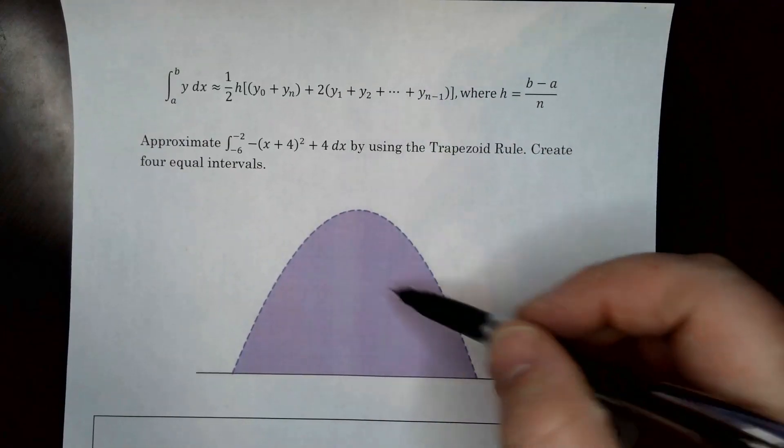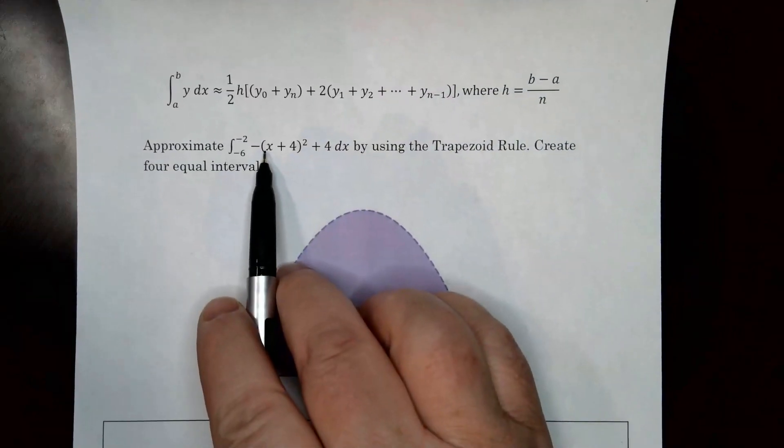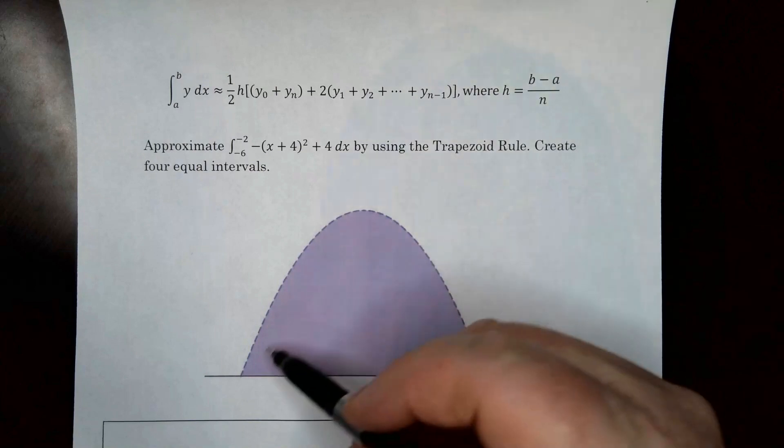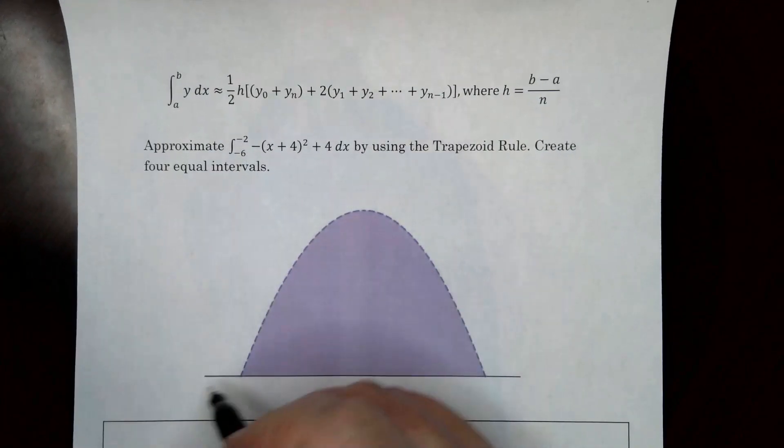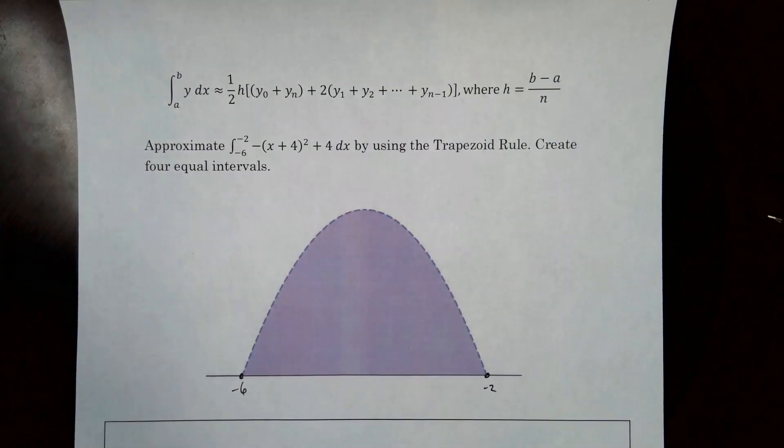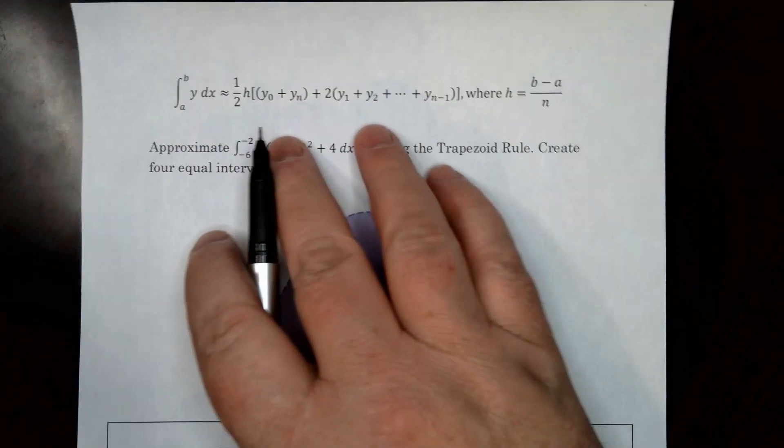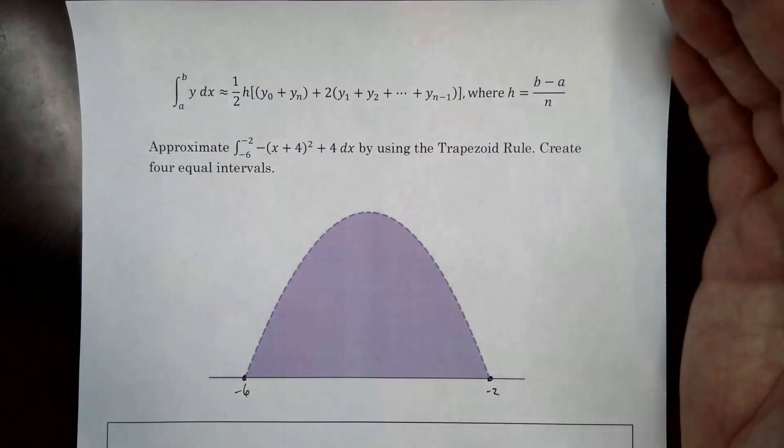We're going to find this shaded area right here. This shaded area is bound by the formula, negative x plus 4 squared plus 4. And it's going to go from negative 6, that would be right here, to negative 2. All right, those are the boundaries. A couple things you have to understand about this formula. Let's see if we can demystify this a little bit because it looks really ugly, but it's actually not too bad.